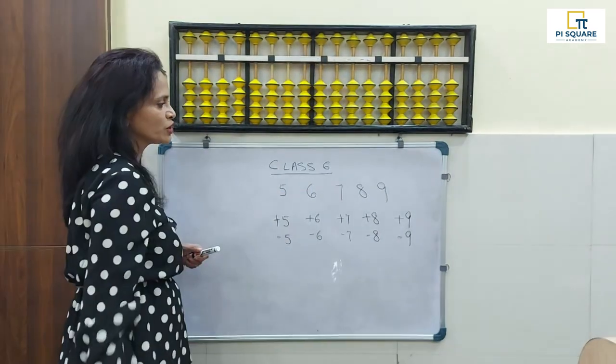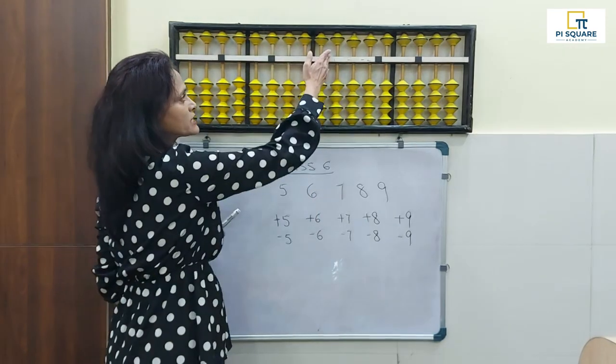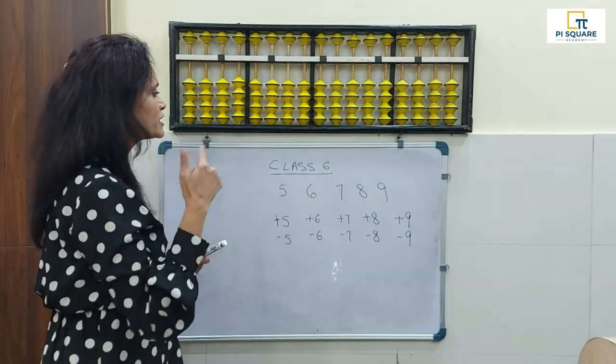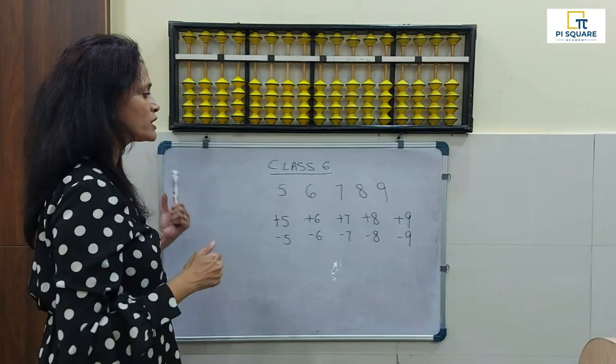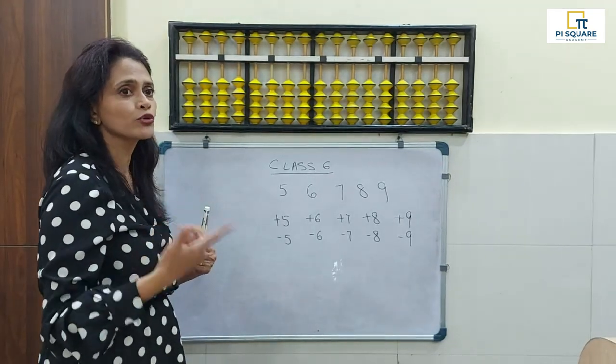And as I said, when nothing is touching, the value is 0. So let us again run through the basic movements. Because the basic movements, we are going to be learning how to add and subtract higher numbers 5, 6, 7, 8, and 9.